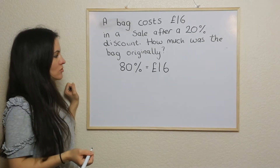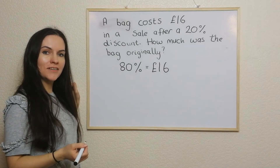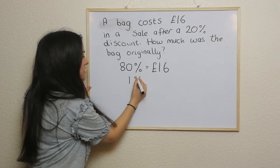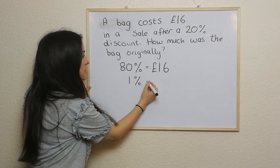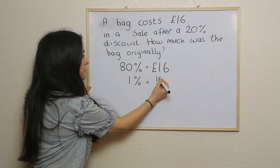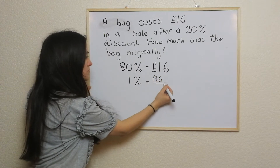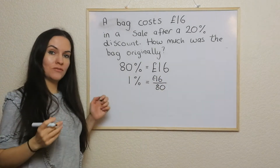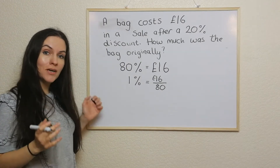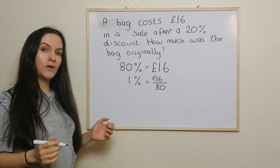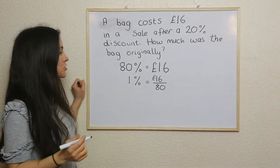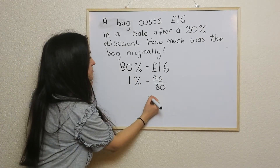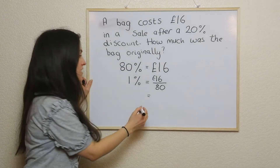Again, we want to get 100%, and we can find 1% just by dividing through by 80. Now some people might reach for a calculator for this type of question, but this is one that could quite often be asked in a non-calculator question. So what you have to do is look at simplifying this fraction — we've got 16 over 80.